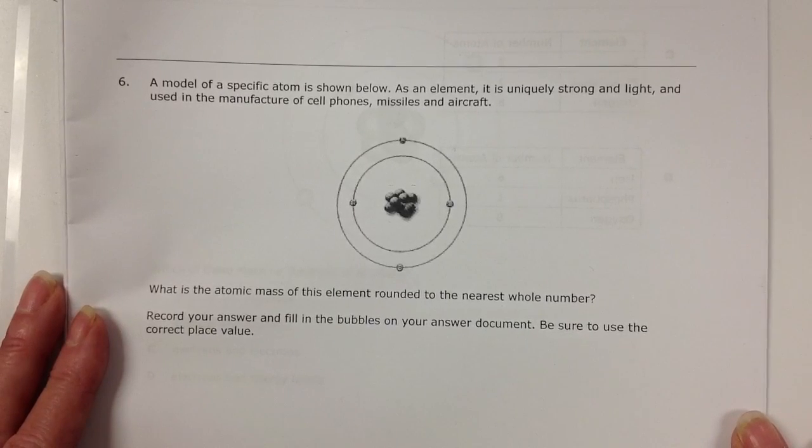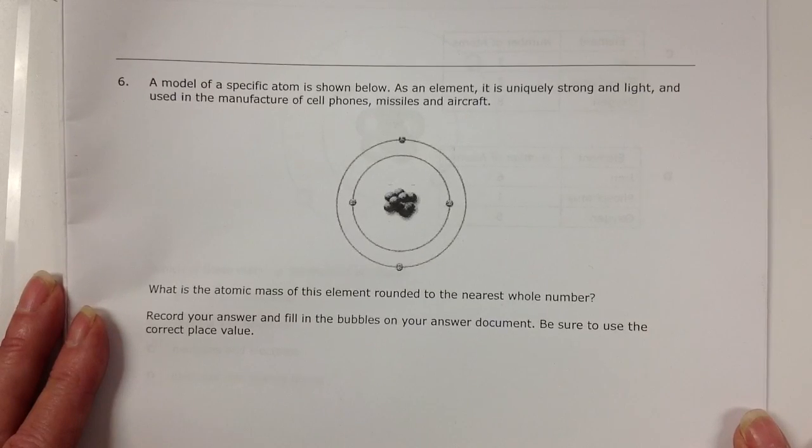Question number six. A model of a specific atom is shown below. As an element, it is uniquely strong and light and used in the manufacture of cell phones, missiles, and aircraft.